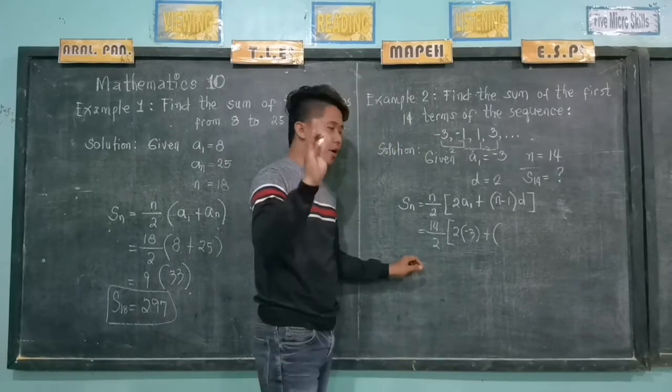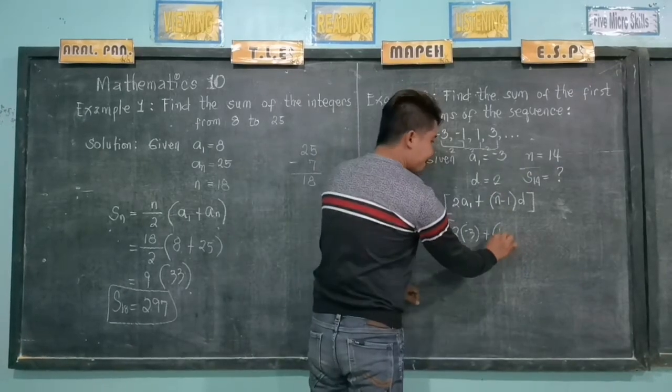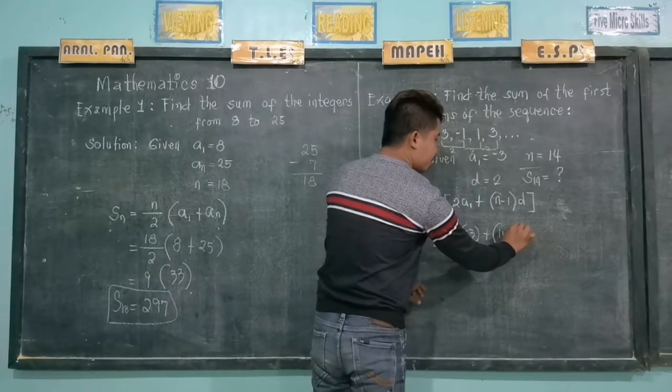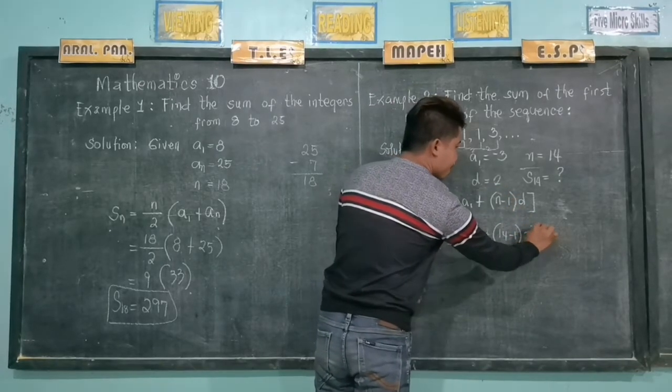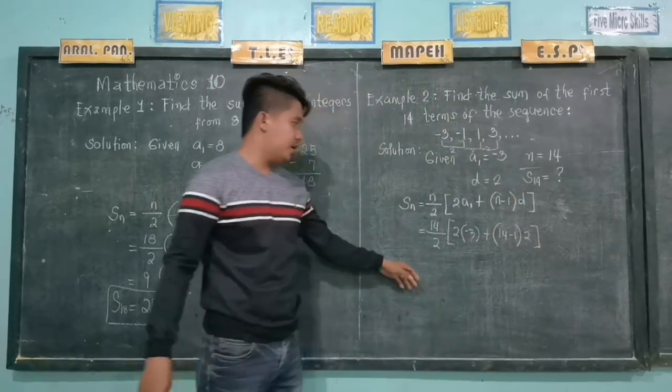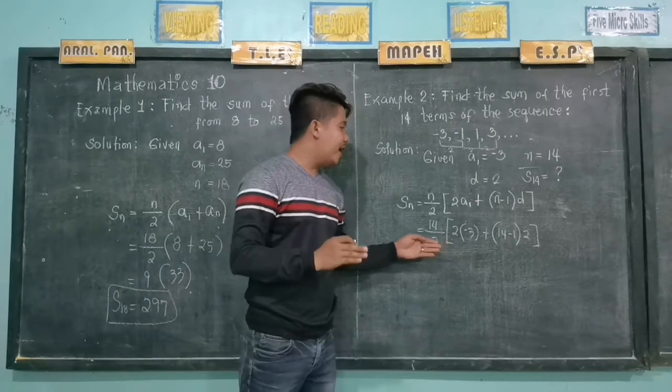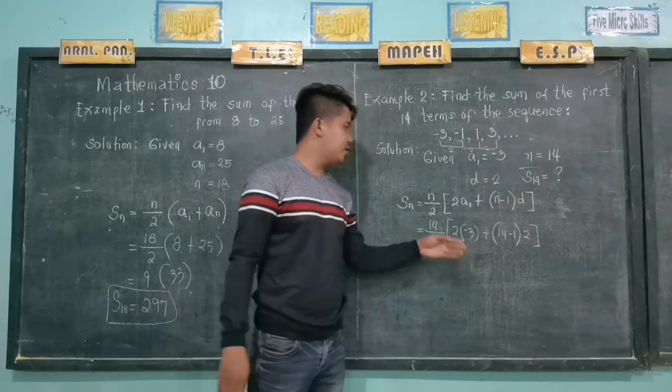Plus our n, we have 14, minus 1, times d, and our d is 2. We simply substitute the given values to the formula.